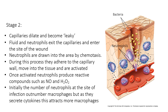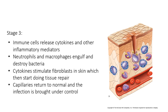During this process, neutrophils adhere to the capillary wall, move into the tissue, and are activated. Once activated, neutrophils produce active compounds such as nitric oxide, which is a vasodilator, and hydrogen peroxide. Initially, the number of neutrophils at the site of infection outnumber macrophages, but as they secrete cytokines, more macrophages are recruited. Immune cells release cytokines and other inflammatory mediators. Neutrophils and macrophages engulf and destroy bacteria. The cytokines then stimulate fibroblasts in the skin, which begin tissue repair. Capillaries return to normal and the infection is brought under control.